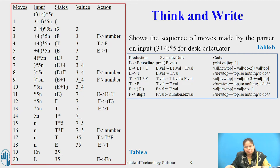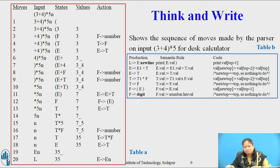Table A shows the sequence of moves made by the parser on the input 3 + 4 * 5 for the desk calculator. The content of the state and val fields of the parsing stack are shown after each move. We replace the stack states by their corresponding grammar symbols. Consider the sequence of events on seeing the input symbol left parenthesis. In the first move, the parser shifts the state corresponding to the token left parenthesis onto the stack.